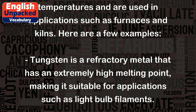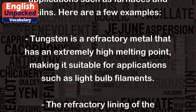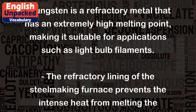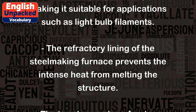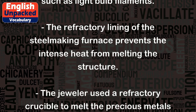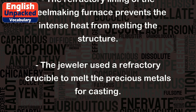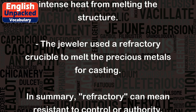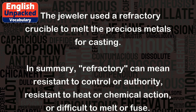Here are a few examples. Tungsten is a refractory metal that has an extremely high melting point, making it suitable for applications such as light bulb filaments. The refractory lining of the steelmaking furnace prevents the intense heat from melting the structure. The jeweler used a refractory crucible to melt the precious metals for casting.